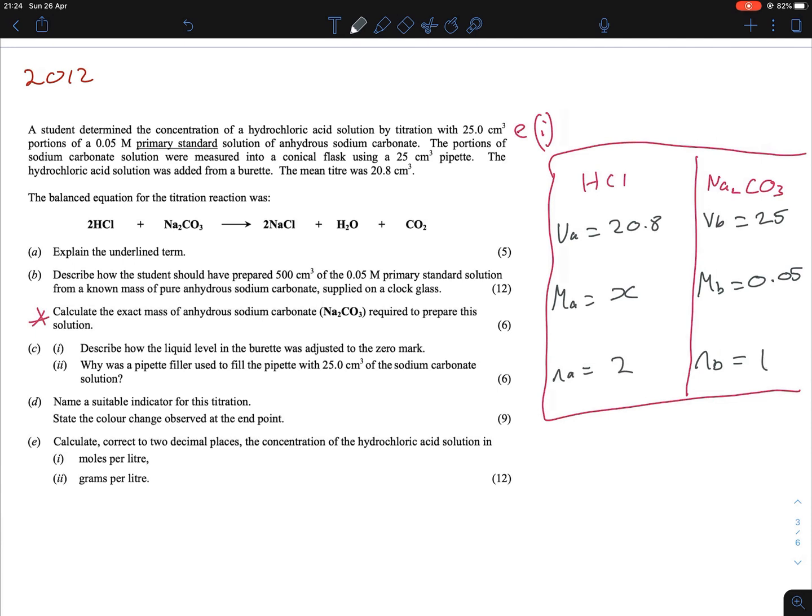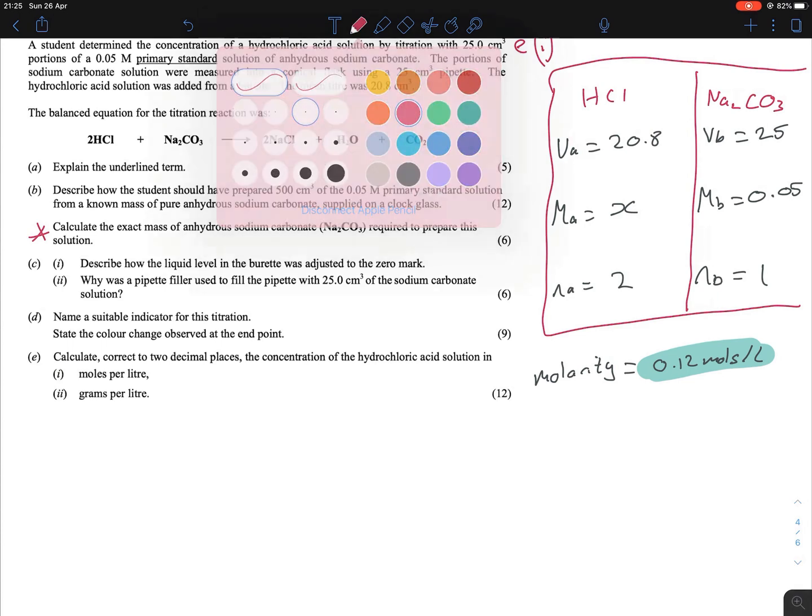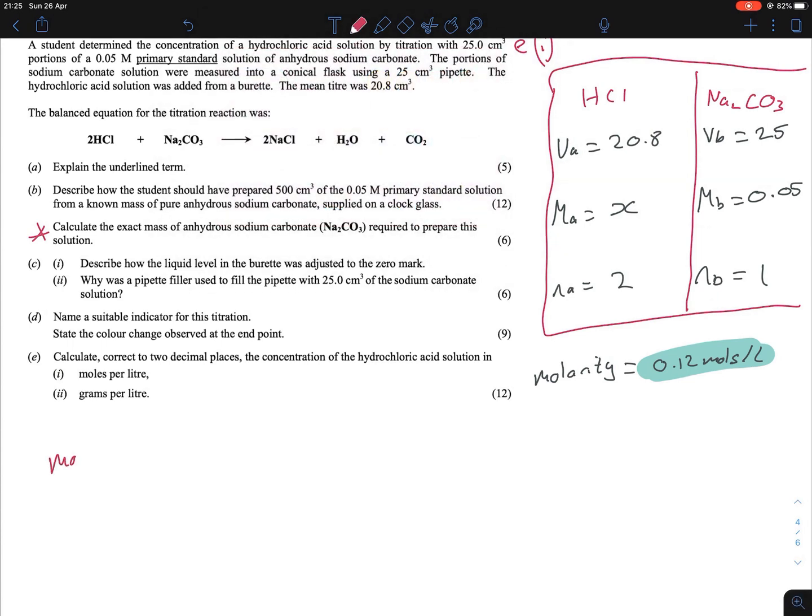And if you do that out correctly, you're going to get your molarity to be equaling 0.12 moles per liter. So that's the answer to the first one. Now, you're asked to get it in terms of grams per liter. Very common formula, all it is is molarity times the MR equals grams per liter. Mass per liter, same thing.